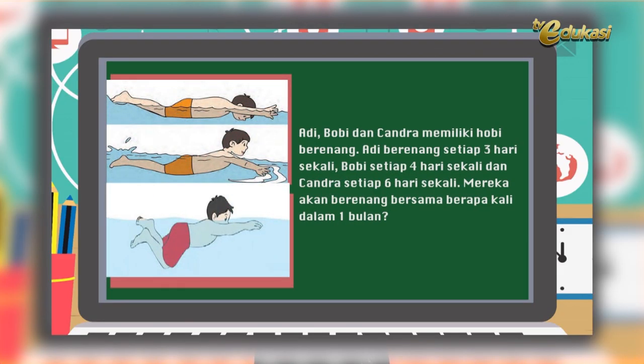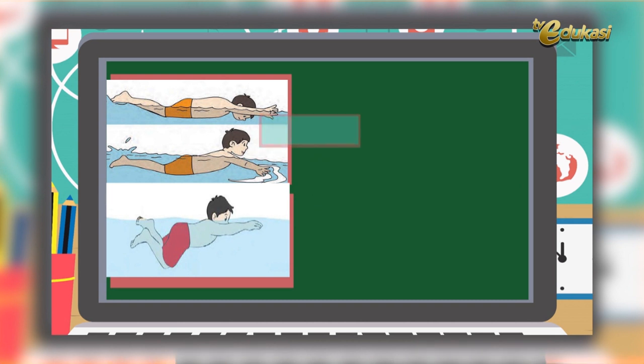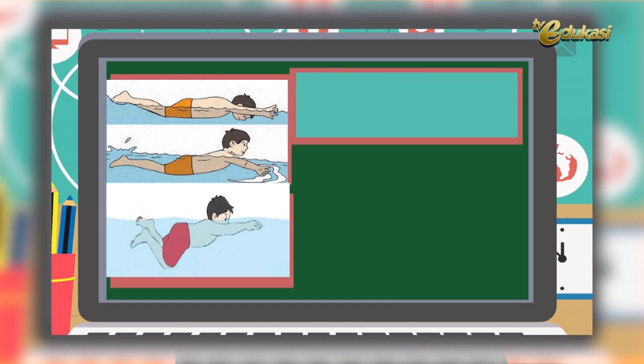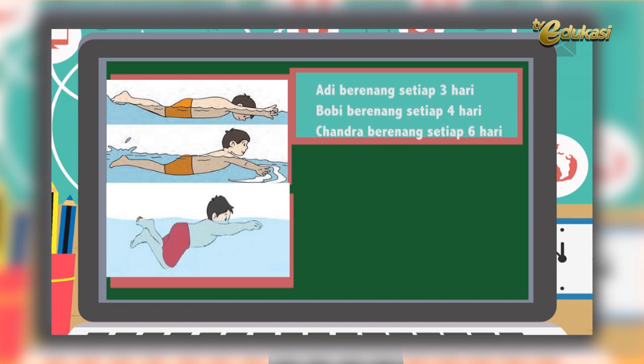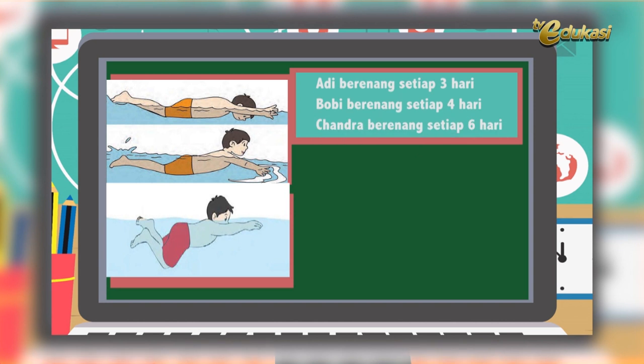Sekarang kita akan membahas soal kelipatan dalam bentuk HOTS, atau Higher Order Thinking Skill, atau berpikir tingkat tinggi. Adi, Bobby, dan Chandra memiliki hobi berenang. Adi berenang setiap 3 hari sekali, Bobby setiap 4 hari sekali, dan Chandra setiap 6 hari sekali. Mereka akan berenang bersama berapa kali dalam 1 bulan?